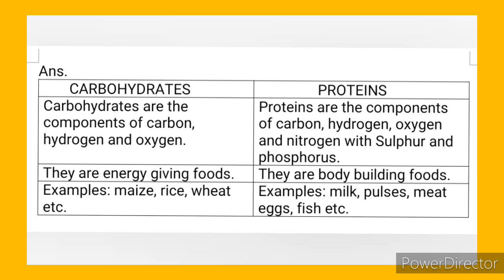Second point under carbohydrates: they are energy giving foods. Under proteins: they are body building foods. Third point, examples of carbohydrates: maize, rice, wheat, etc. Proteins examples: milk, pulses, meat, eggs, fish, etc. These three points you write down as the differences between carbohydrates and proteins.